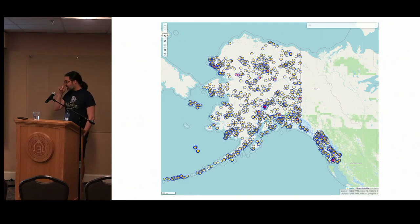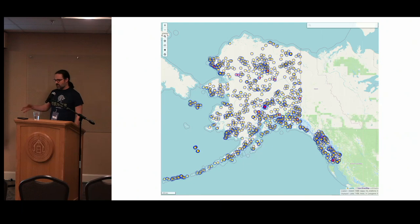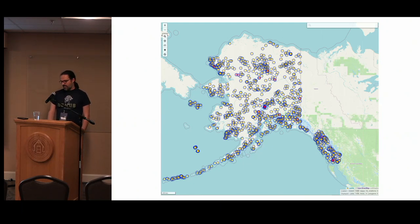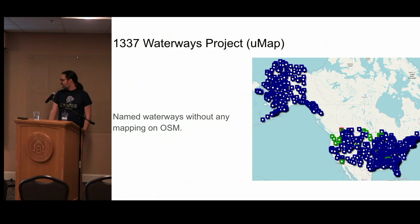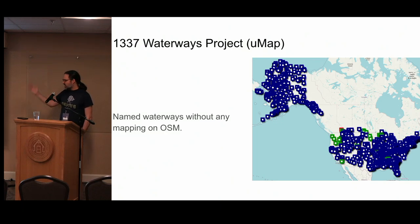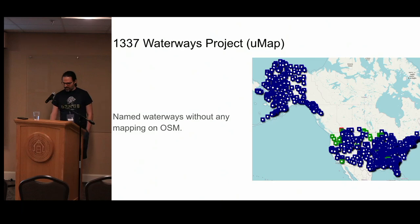He was loading data files into JOSM and clicking through them, verifying, moving stuff around, not adding things that were clearly wrong, and sending mail to GNIS about things that were really ambiguous. We also made a waterway project for named waterways — about 1,300 waterways named in GNIS that are not on the map in any way, shape, or form. We used UMAP to make this, just a bunch of pins that people can color when they start working on them, as a simple task manager.